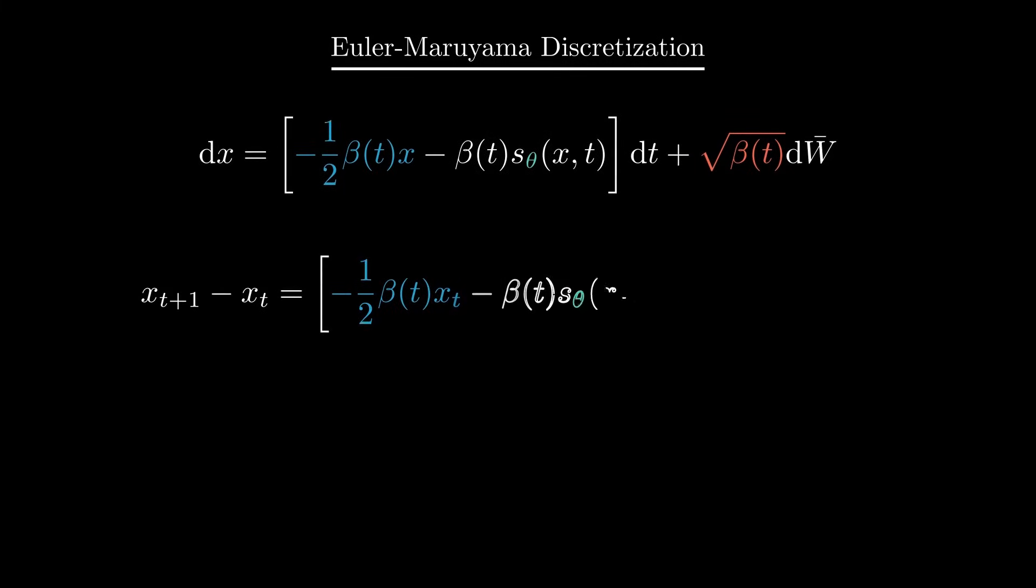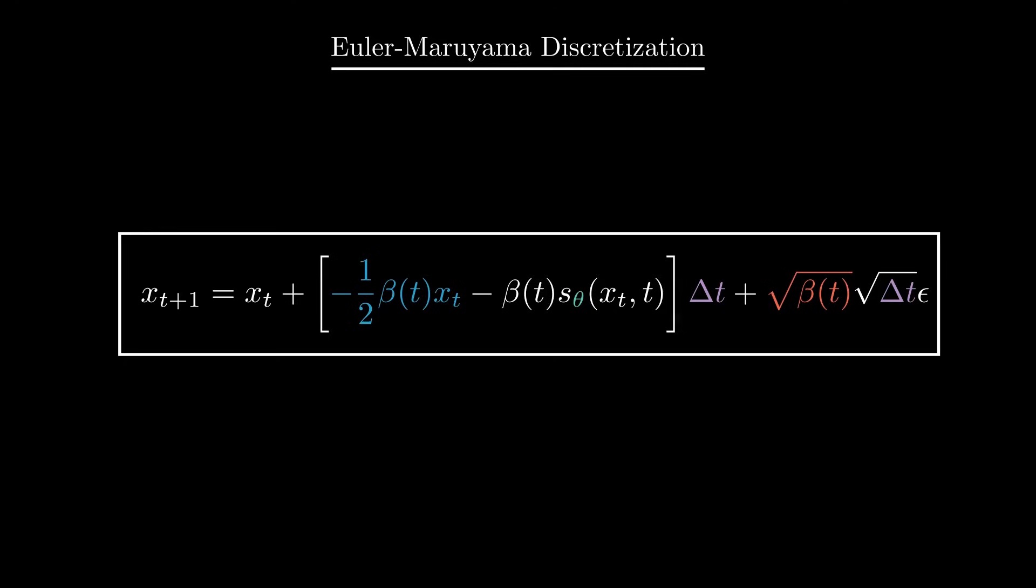First, we approximate the infinitesimal change dx as the difference between x at the next time step and x at the current one. And after that, instead of taking an infinitesimal change in t, we take a discrete time step delta t. Finally, we also need to discretize the Brownian process. It's again very simple. It's just square root of our time increment times a sample from a normal distribution. And that's pretty much it. Now we have a very simple algorithm to generate samples using our trained neural network, which acts just as the one in DDPM.